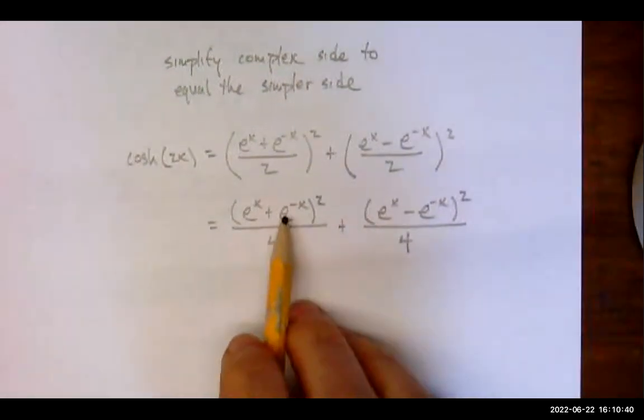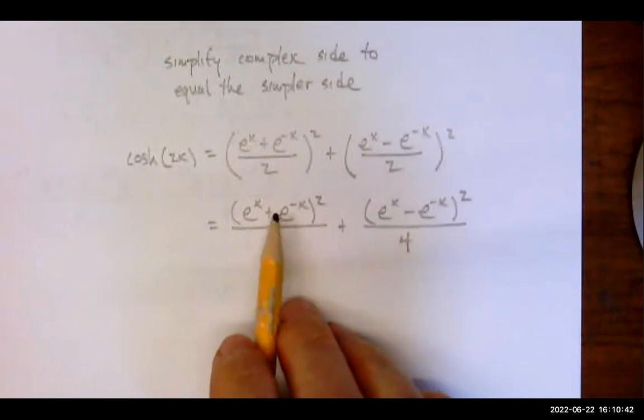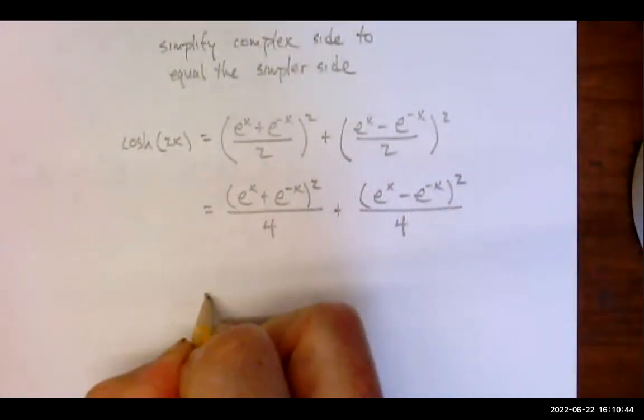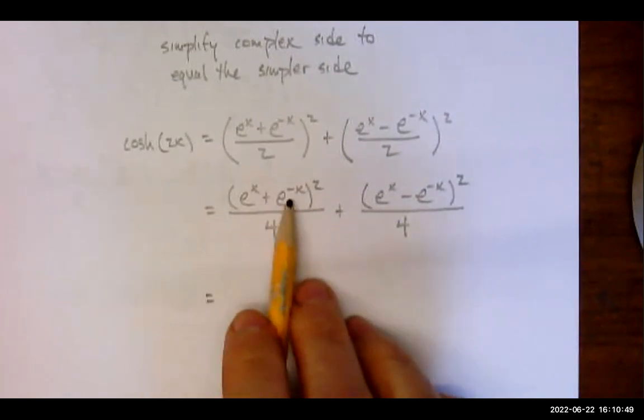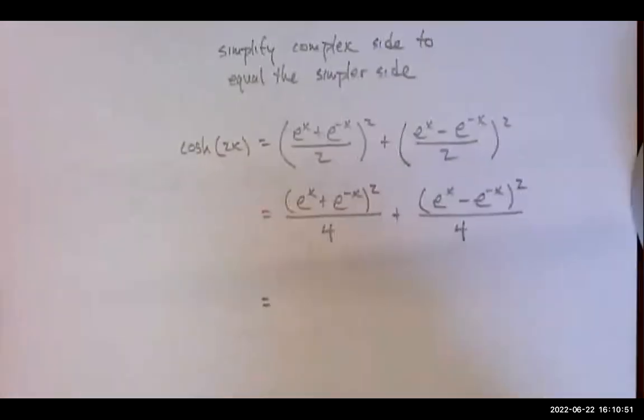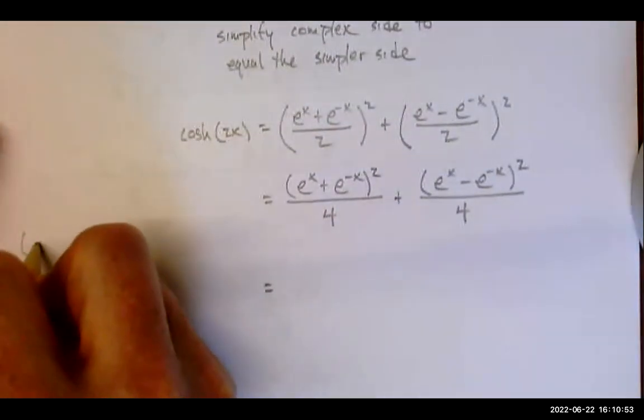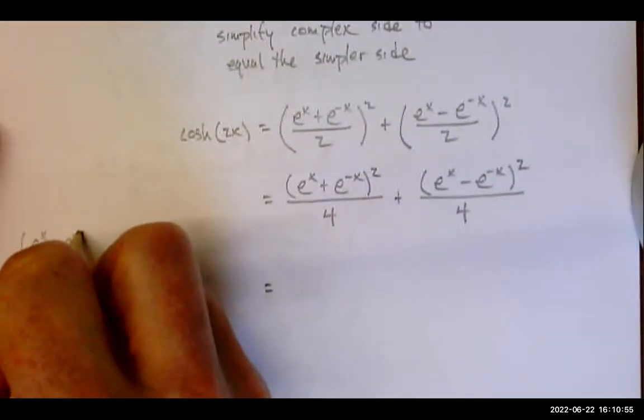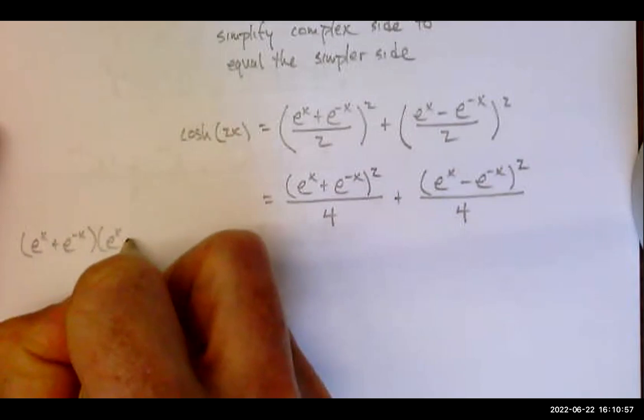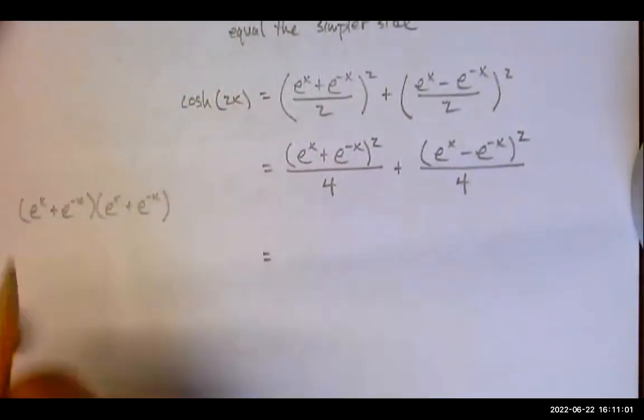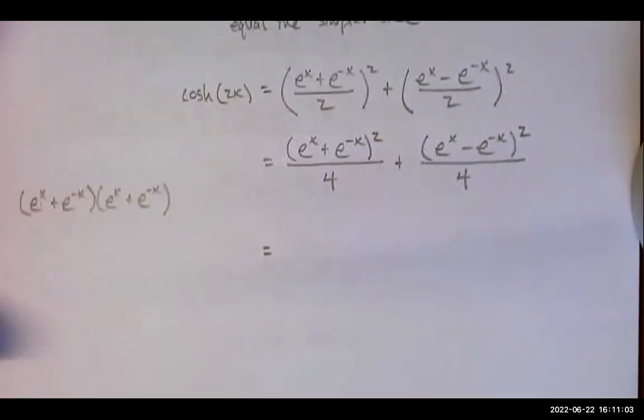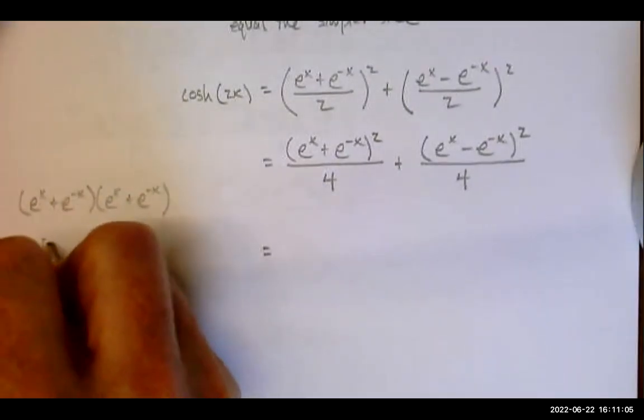Now to square out these numerators, this is kind of interesting. So think of it foiling e to the x plus e to the negative x times itself. Maybe I'll do that over here on the side. Something happens here that's kind of cool. So e to the x times e to the x, e to the 2x, we add exponents.